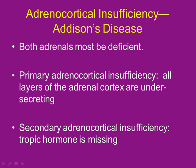Adrenal cortical insufficiency — Addison's disease. The main concern is aldosterone and cortisol. To get true Addison's disease, both adrenal glands must decrease their ability to make aldosterone and cortisol, because if only one gland fails the other picks up the slack — like kidneys. Primary adrenal cortical insufficiency means the adrenal gland specifically is failing; all layers of the adrenal cortex are under-secreting.